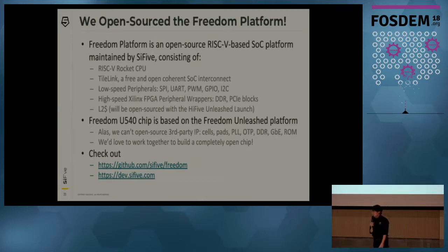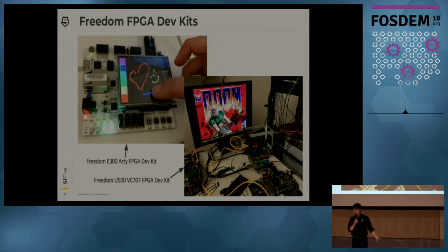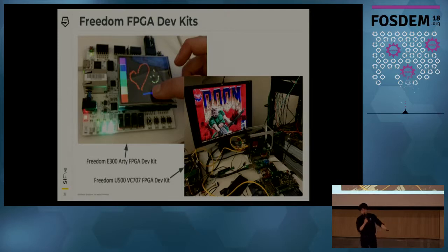To look at the codebase, you can go to github.com/sifive/freedom as well as dev.sifive.com. You can map the Freedom platforms onto FPGAs — for example, the Freedom Everywhere platform on a $99 Arty board, which is Arduino shield compatible. For the Freedom Unleashed platform, you can map it onto the VC707, which has DRAM and PCIe — you can run Doom on it. You can customize your Freedom platform for your needs and come work with SiFive to realize it into an actual chip.